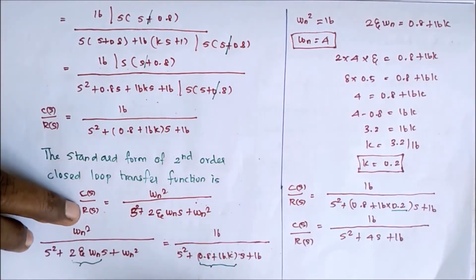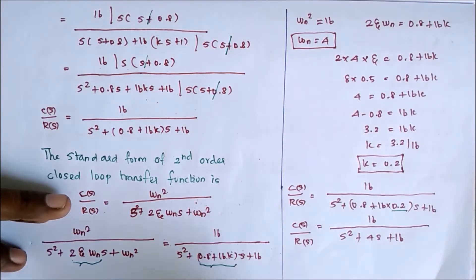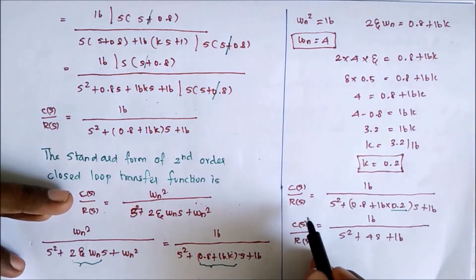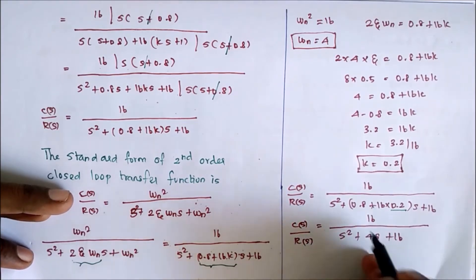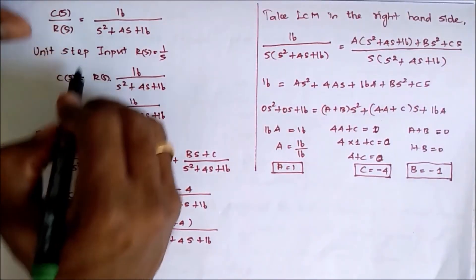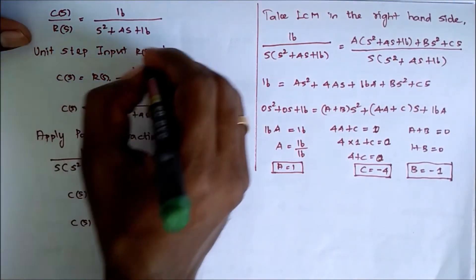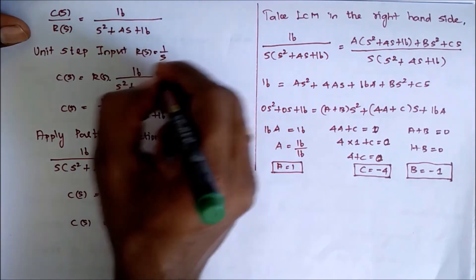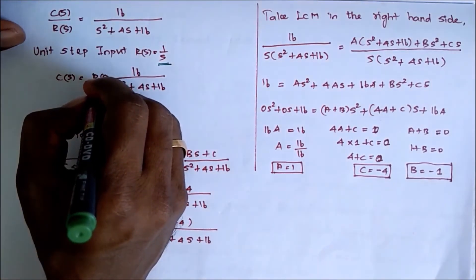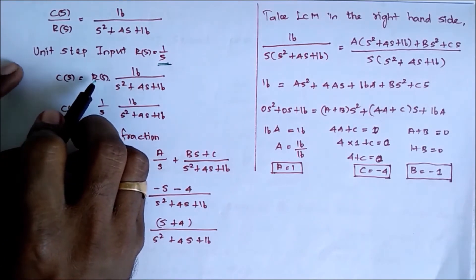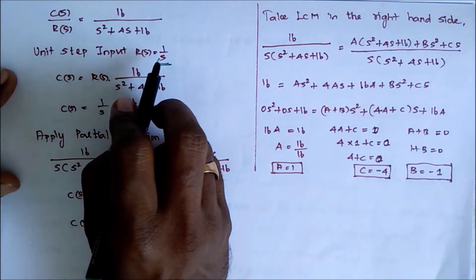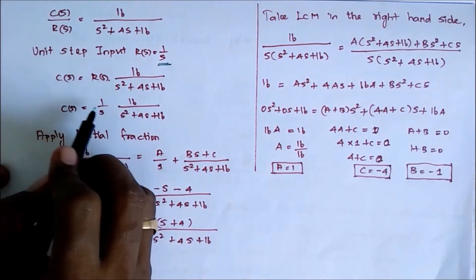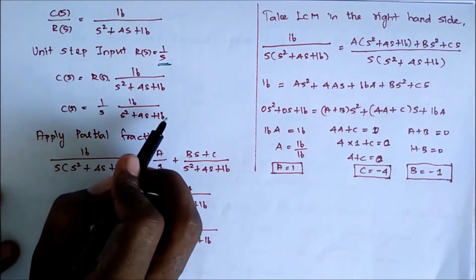From the given problem, we have to find the response, which means we need to get C(t). For that, first we arrange C(S) equal to R(S) into this transfer function term. From the given problem, we consider unit step input. R(S) is the input in terms of Laplace transform. The Laplace transform of unit step input is R(S) equal to 1/S. Therefore, C(S) equals 1/S into 16 divided by S squared plus 4S plus 16.